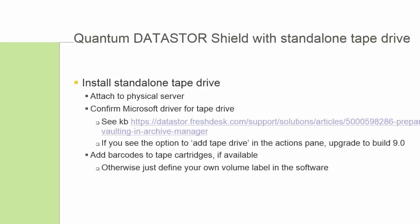We're going to make use of barcode labels and attach them, apply them to the tape cartridges, if the tapes came with barcode labels. The software wants to record a volume label for each tape, and we can use the barcode label information for that if it's available. If it isn't, no trouble — we can simply define our own volume labels in the software.